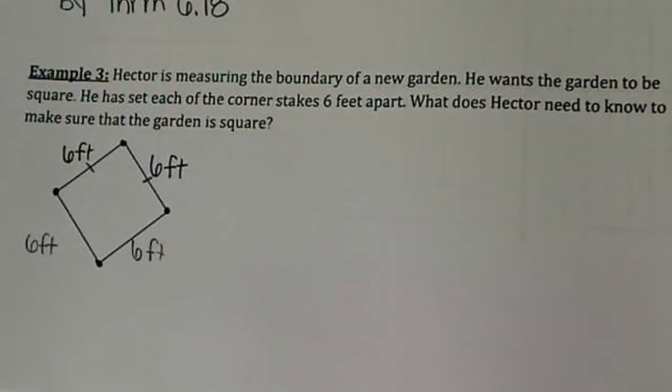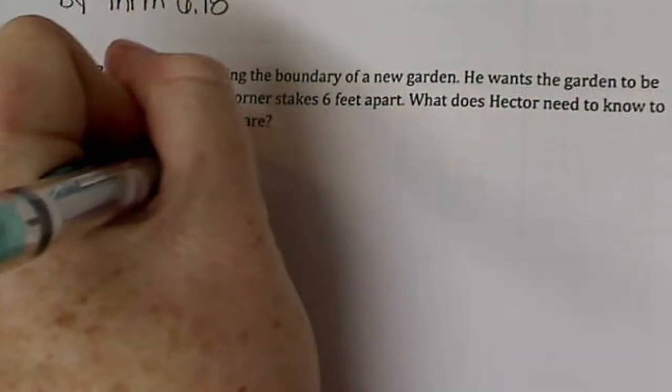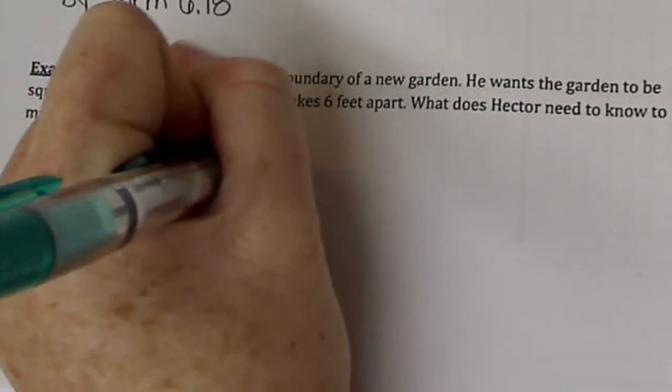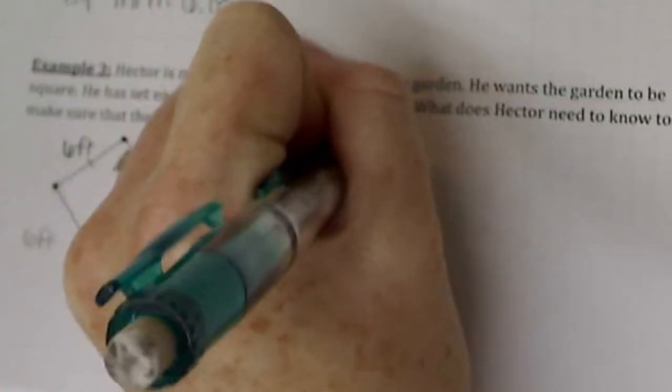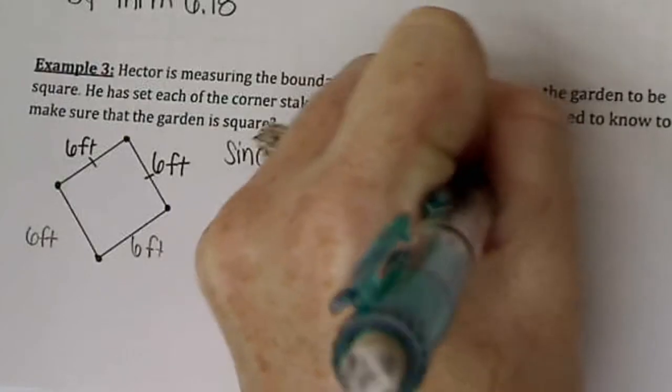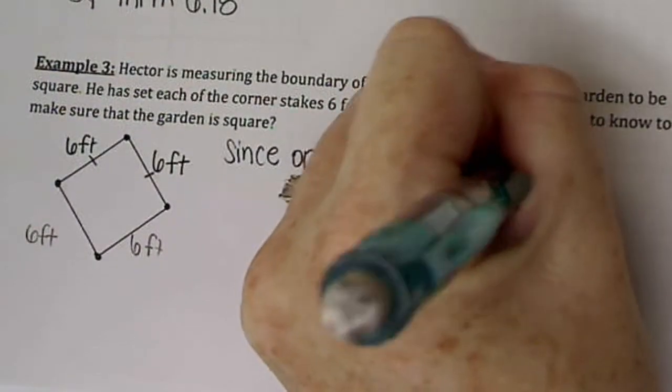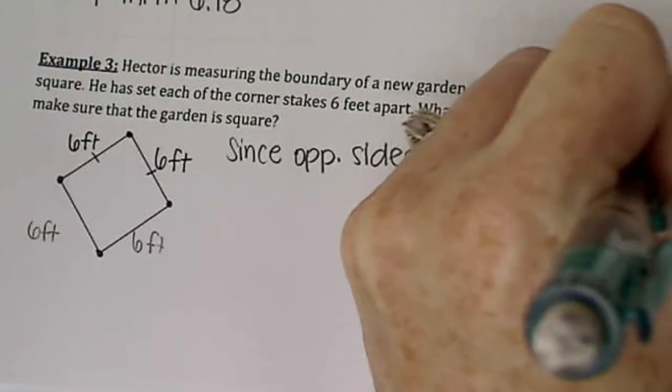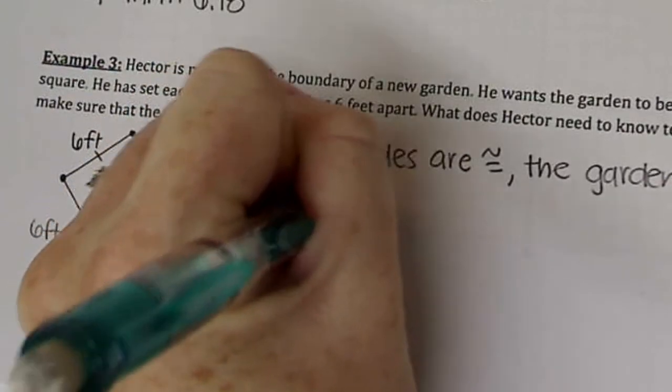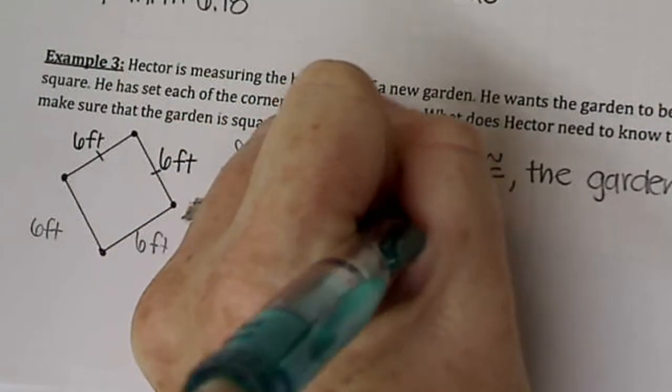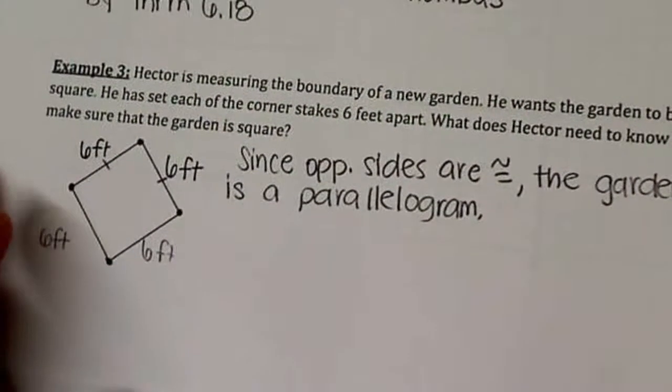So the first thing we need to do is prove or state that this is a parallelogram. And it is because opposite sides are congruent. So we need to state that. Since opposite sides are congruent, the garden is a parallelogram. Okay, so we know that this is a parallelogram.